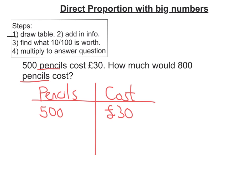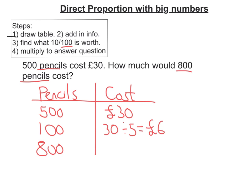I'm going to work out what 100 pencils is worth, because I need to find the cost of 800. If £30 is how much 500 pencils cost, then 30 divided by 5 gives me what 100 pencils cost — that's £6. So to work out what 800 pencils cost, I multiply £6 by 8, which gives £48. So 800 pencils cost £48.